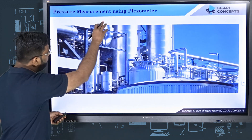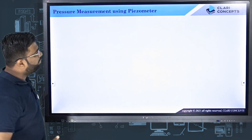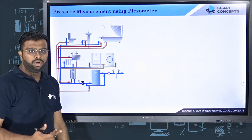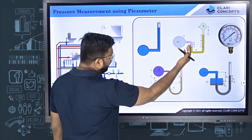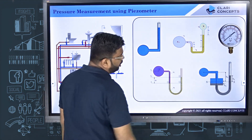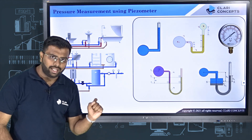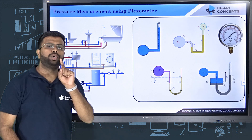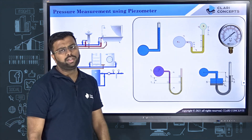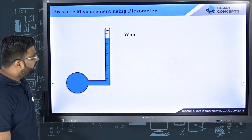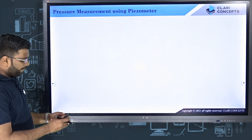Measuring the pressure of a fluid flowing through different pipes is very essential in industries. There are many devices available to measure the pressure of a fluid flowing through pipes — one of them is a piezometer, then we have a U-tube manometer, single column manometer, and Bourdon pressure gauges. Today in this lecture we are going to understand how we can measure pressure using the simple device called a piezometer.